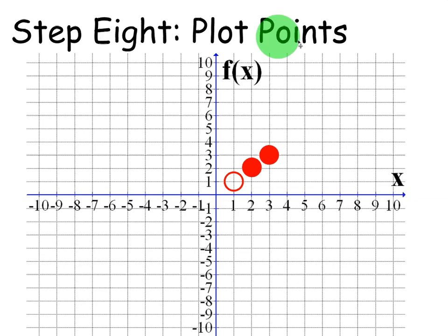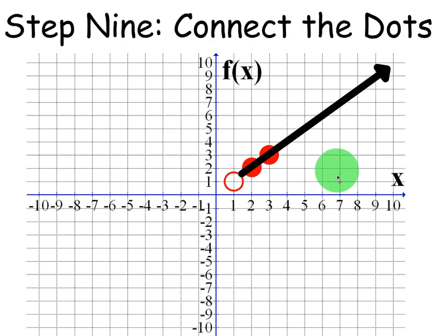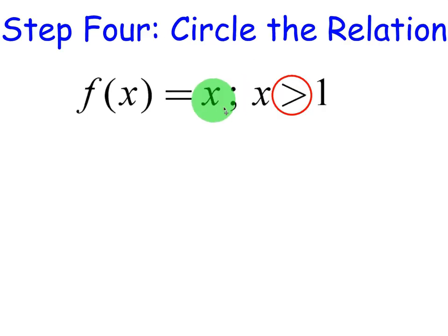Step 8 is going to be to plot those additional points. And guess what step 9 is? Connect the dots. I can't put my graph here at 1, 1 because it's a hole, but I certainly can go through the points and extend it forever. I know it's going to be a line because, again, it's f of x equals x.